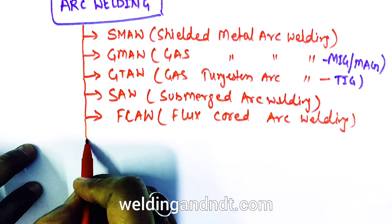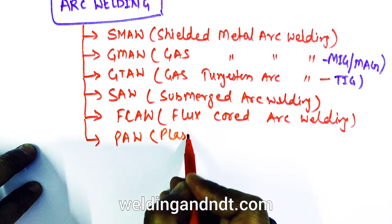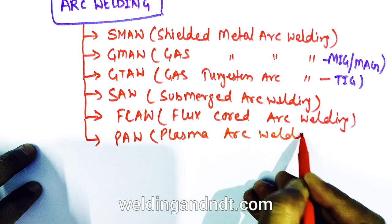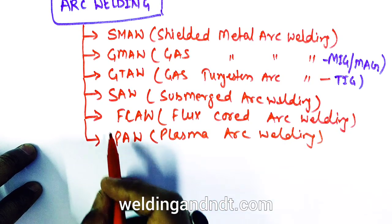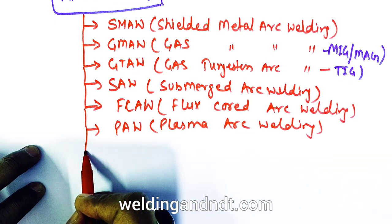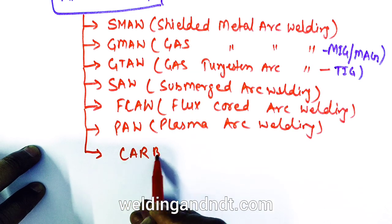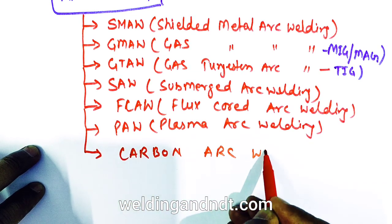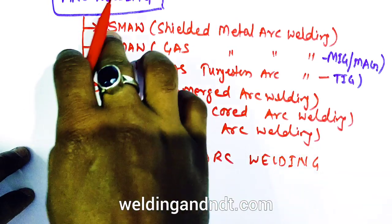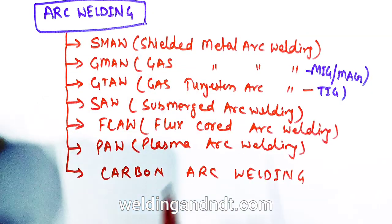We also have plasma arc welding, PAW, which is an extension of GTAW or TIG welding. And then we have carbon arc welding. These are some of the common arc welding processes which are very popular in industry.